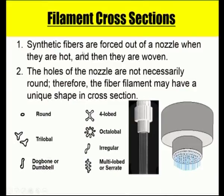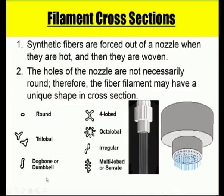Synthetic fibers are forced out of nozzles when hot. The holes of the nozzles are not necessarily round, so the fiber filament may have a unique shape in cross section. Based on the material and nozzle, the shape may be round, trilobal, dog bone, dimple shape, four-lobed, octal-lobal, or irregular multi-lobed. Different shapes can be obtained depending on which polymeric material is passed through the nozzles.